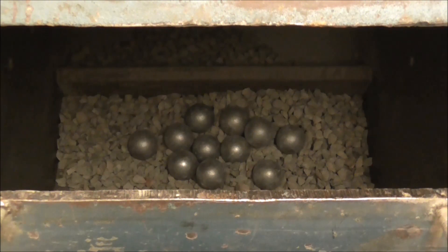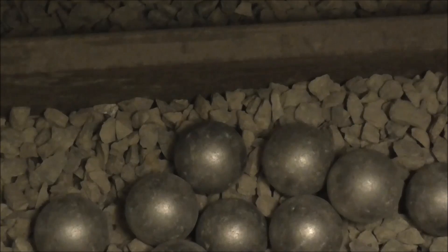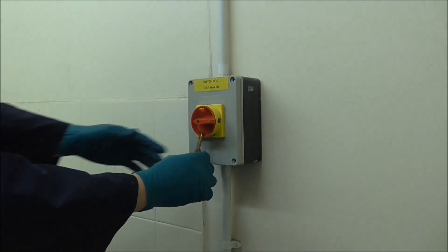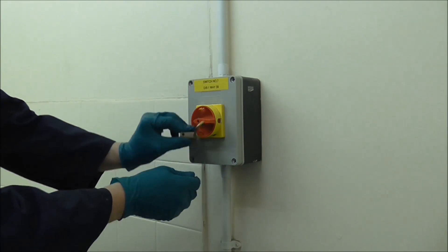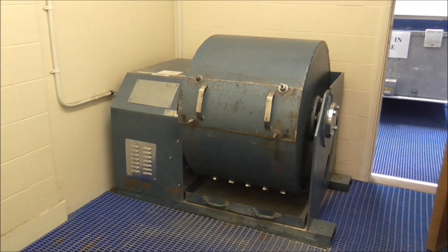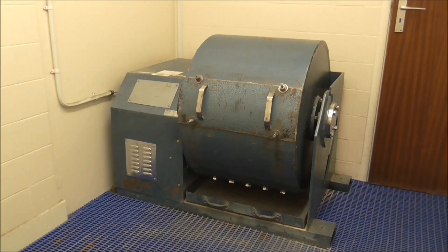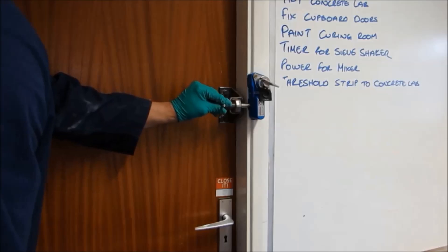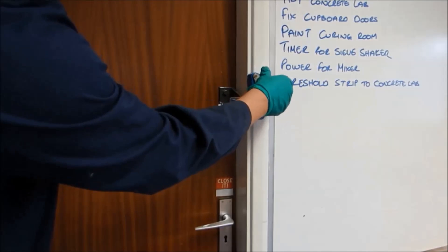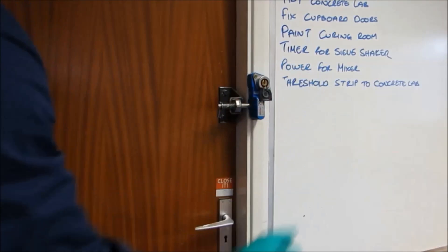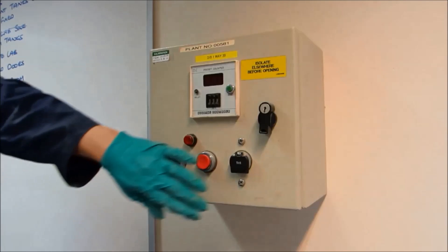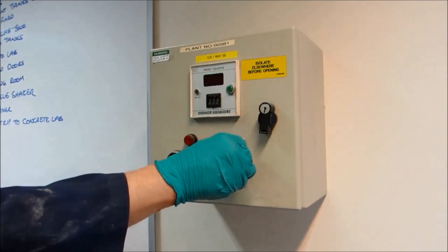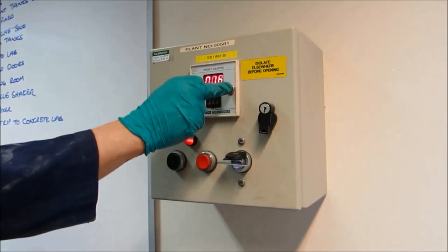After the balls and aggregate have been loaded into the drum, the front cover is replaced and secured. The power is turned on. The operative then leaves the room, making sure that nobody else is inside, locks the door, removes the interlocking key, places the key into the control box, and starts the test.